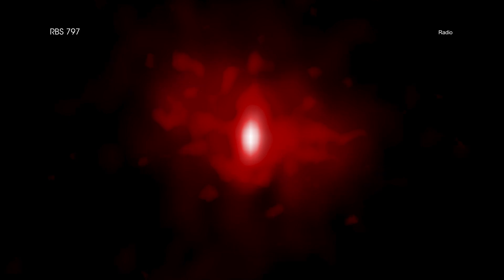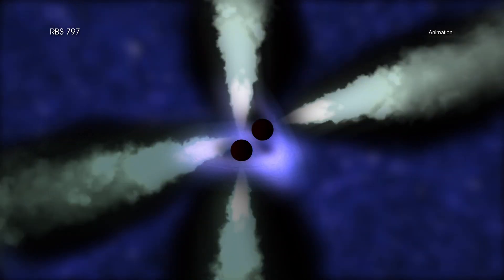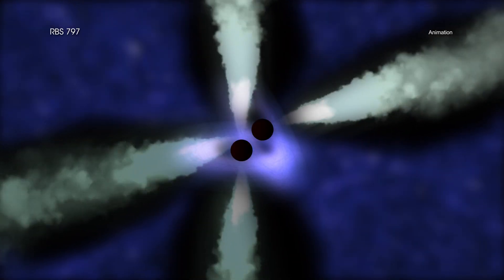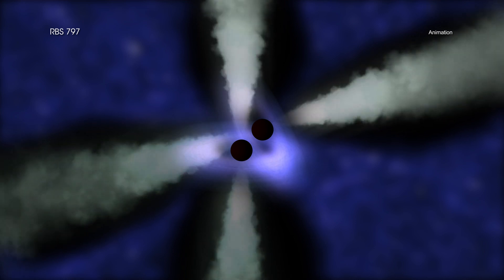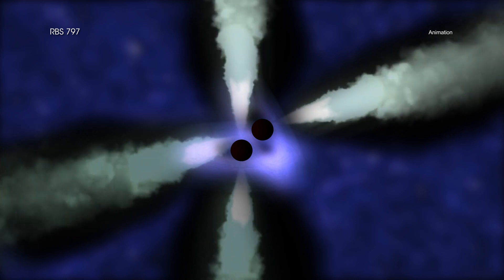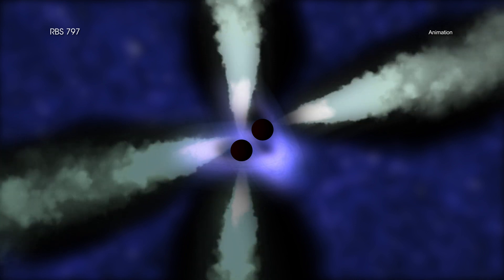How was this quartet of cavities created? The most likely answer, according to the researchers from the new study, is that RBS 797 contains a pair of supermassive black holes that have launched jets in perpendicular directions at almost the same time.